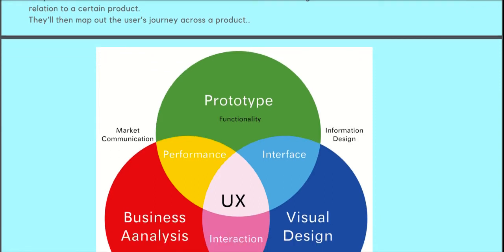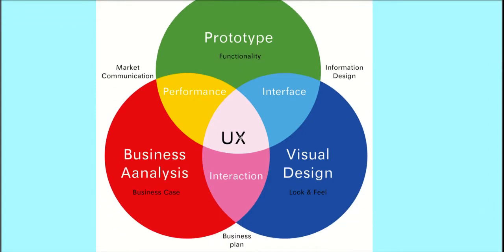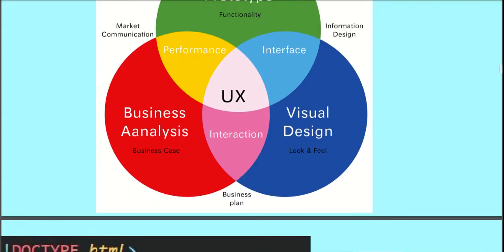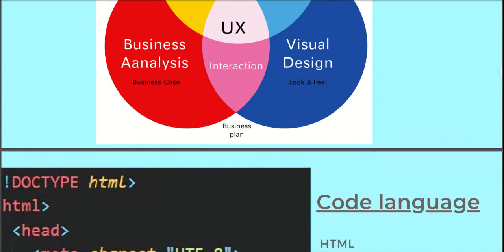You can either be a UI person or a UX person — or you can be both, in which case you are called a front-end developer. The UX person is more intuitive; they work with business analysts, visual designers, and prototypes. It's basically about solving a problem and not just creating an aesthetically beautiful website.